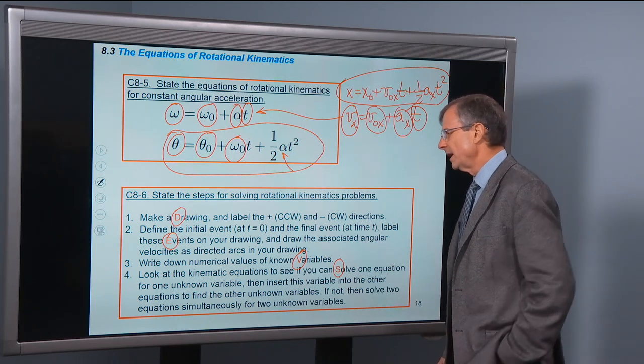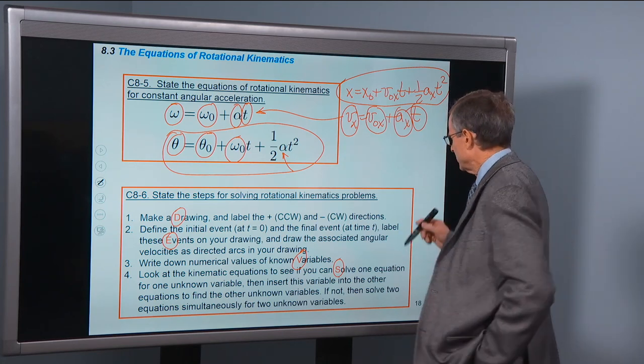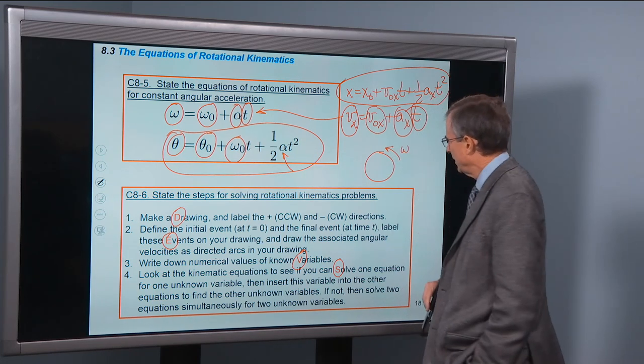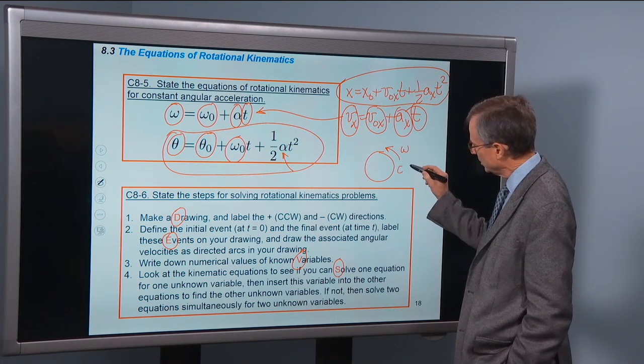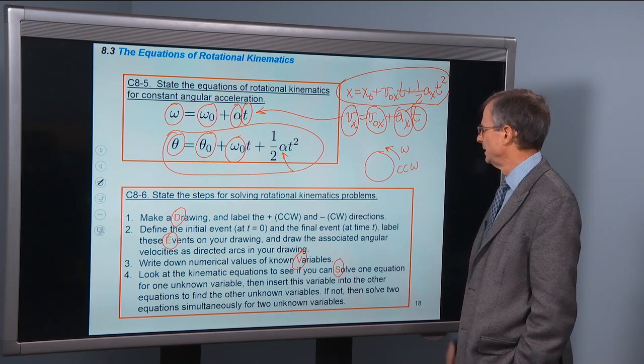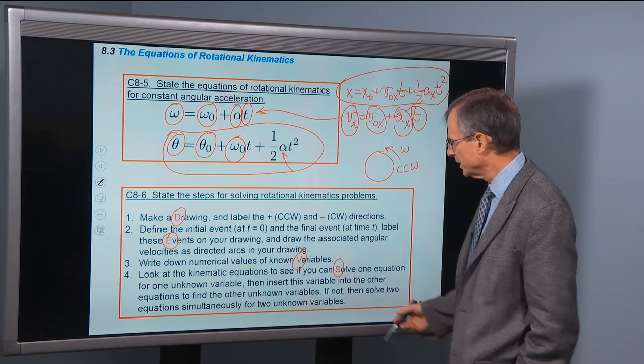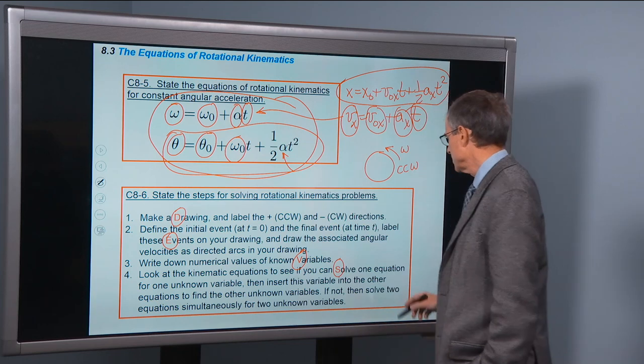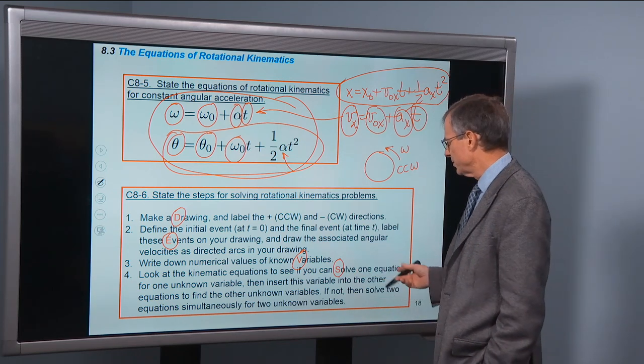Draw the associated angular velocities as directed arcs. So we're talking about, kind of like what we were talking about before, this would be an angular velocity that's counterclockwise with this angular arc. Write down numerical values for the known variables. Look at the kinematic equations to see if you can solve one of them for an unknown variable.